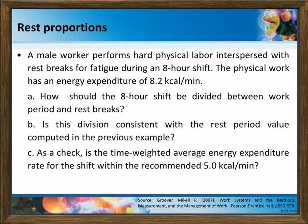The final example: a male worker performs hard physical labor interspersed with rest breaks for fatigue during an 8-hour shift. The physical work has an energy expenditure of 8.2 kcal per minute. First: how should the 8-hour shift be divided between work period and rest breaks? Second: is this division consistent with the rest period value computed in the previous example? And as a check: is the time weighted average energy expenditure rate within the recommended 5 kcal per minute?